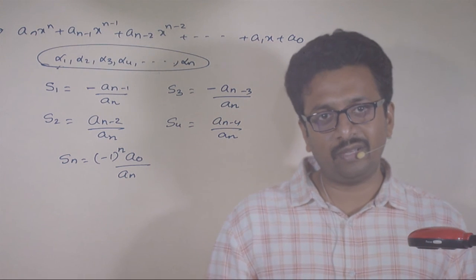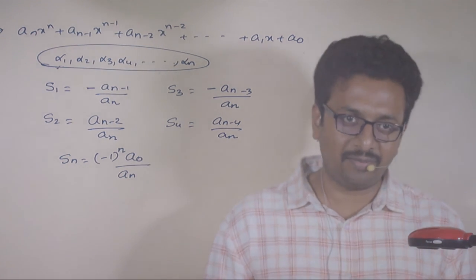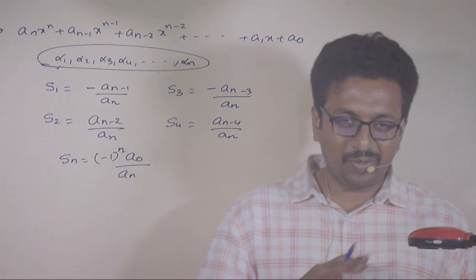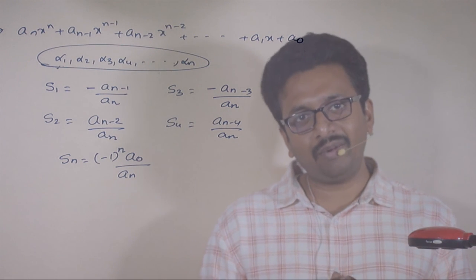So these are the relations between the zeros of a polynomial and the coefficients of a polynomial. This is a very important concept. Hope you understand this concept — we will cover some sample questions as well.